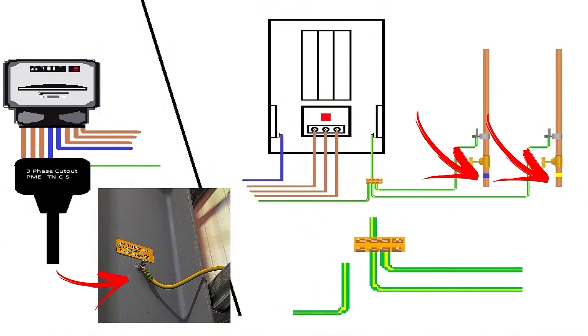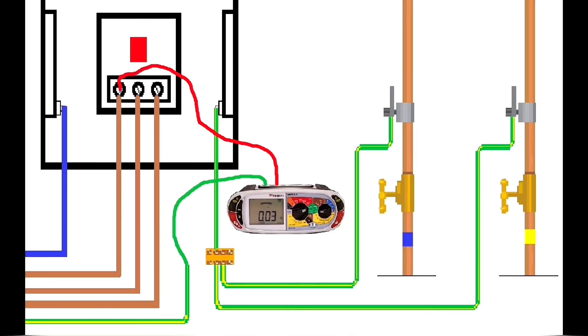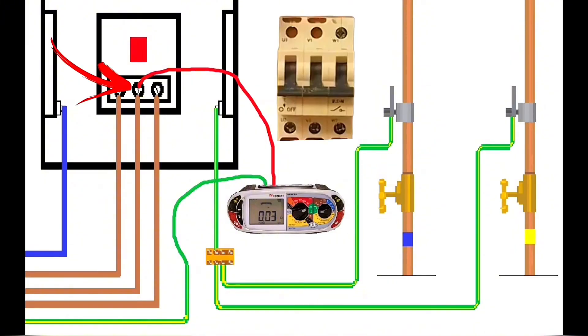I've connected onto my disconnected earthing conductor and L1. I would perform my earth fault loop impedance test and remember the reading. I would then move it on to L2 and repeat the test again. Remember, this is at the bottom of the main switch with the board isolated.